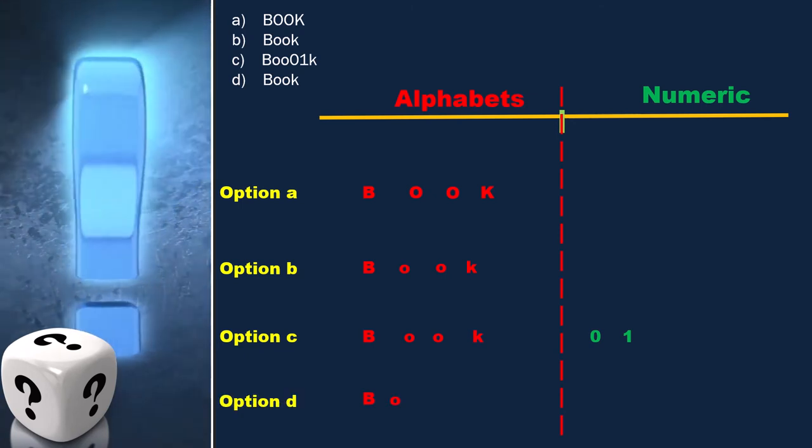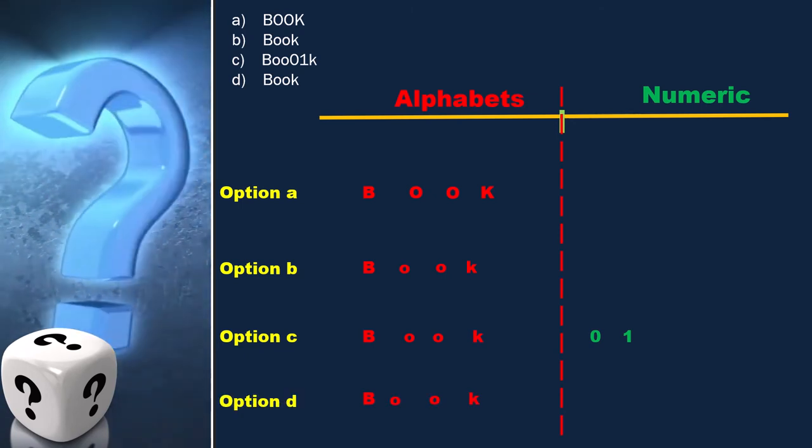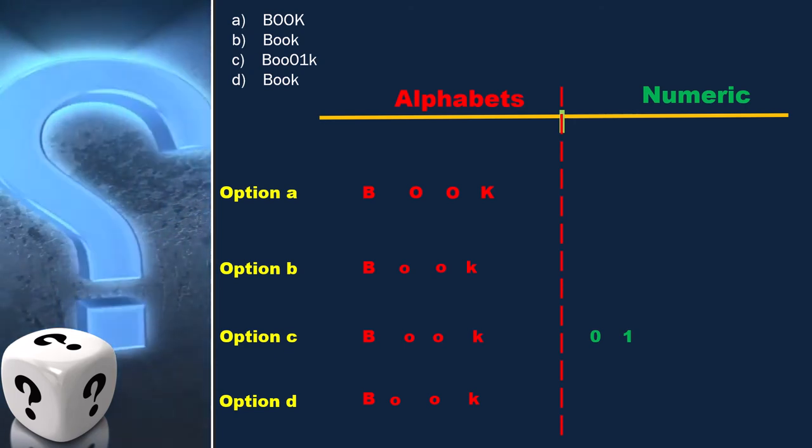And in the last option, B and K is capital, and O, O is in a small case.